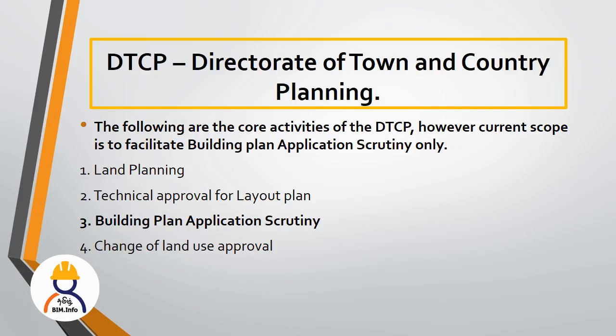Let's look at the types of authority approvals. First is land planning - the building plan covers the floor and top of the building. There is a land planning category; for example, if you are going to do mining, you will submit a report. That is land planning. Technical approval for the layout - the layout plan includes technical details.